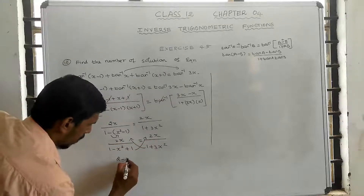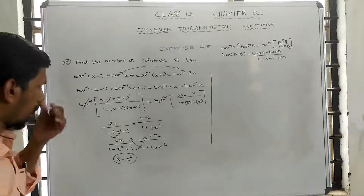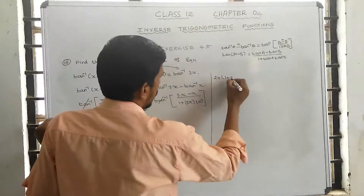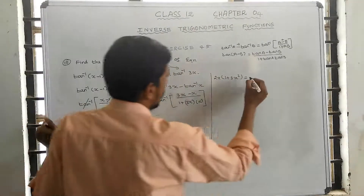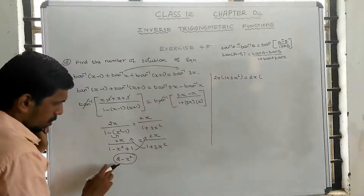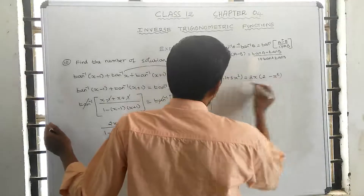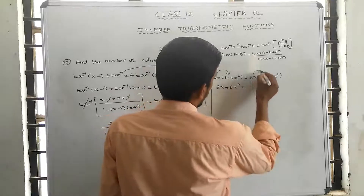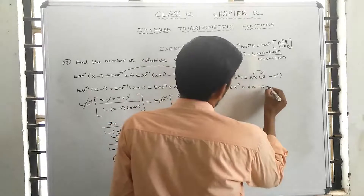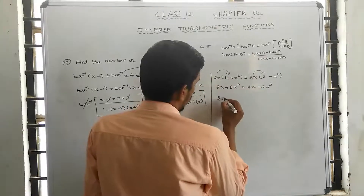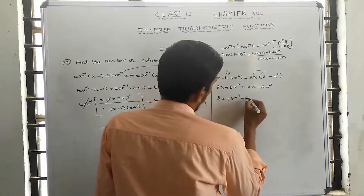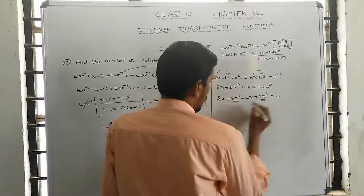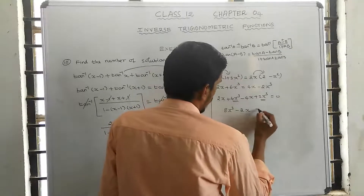Cross multiplying: 2x into 2 minus x square. Expanding gives 2x plus 6x cube equal to 2x minus 4x plus 2x cube. Rearranging: 2x plus 6x cube minus 4x plus 2x cube equal to 0, which simplifies to 8x cube minus 2x equal to 0.